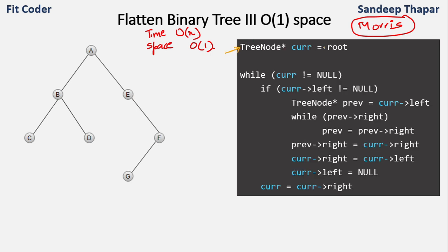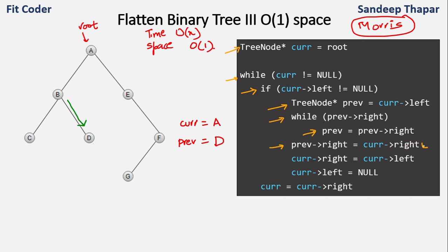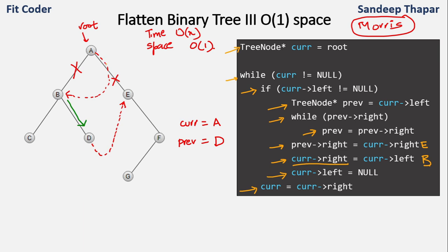We run a while loop until current is not null. We check left of current, which is B — so previous becomes B. We go to the right of B until we reach null, arriving at D. So previous is now D. Right of current is E, so we set E as the right of previous — right of D will point to E. Then we set right of A equal to left of A (which is B), so right of A becomes B, breaking the old link. We set left of A to null. Current now moves to right of A, which is B.